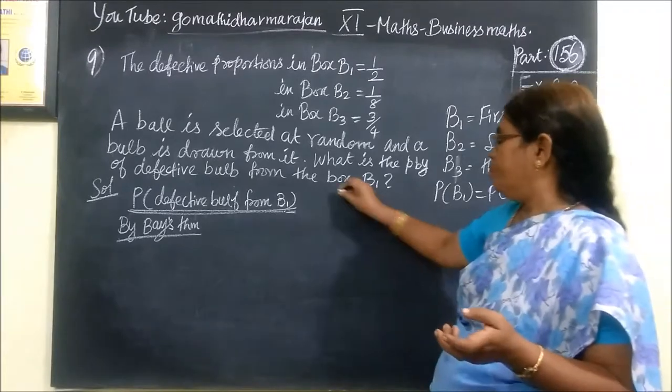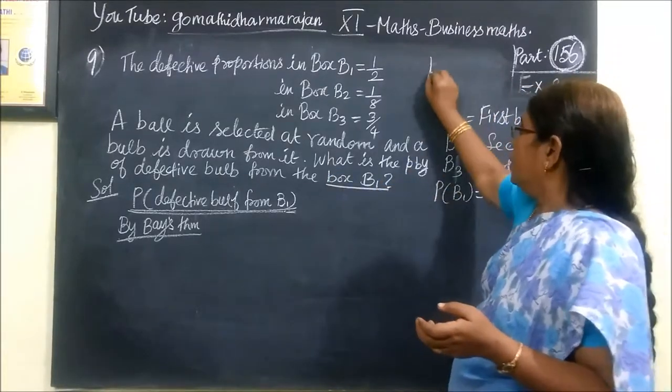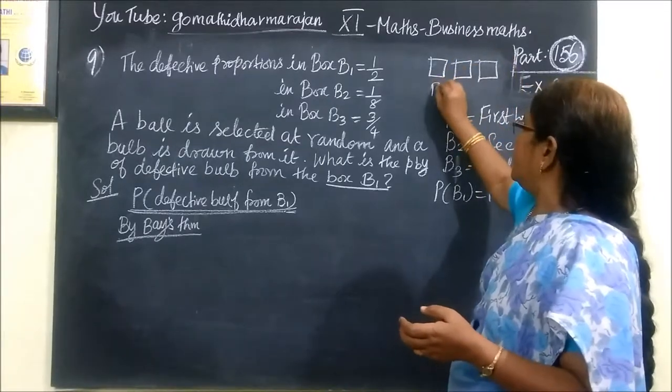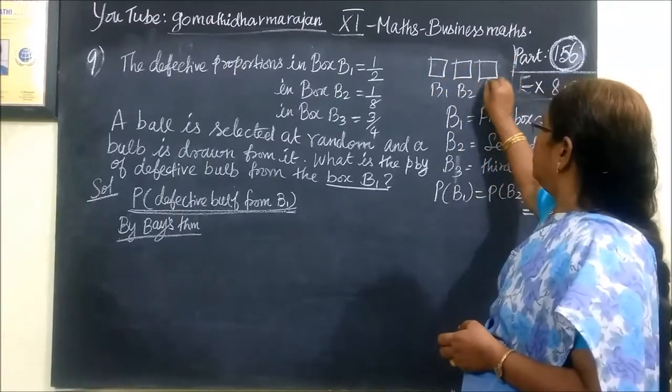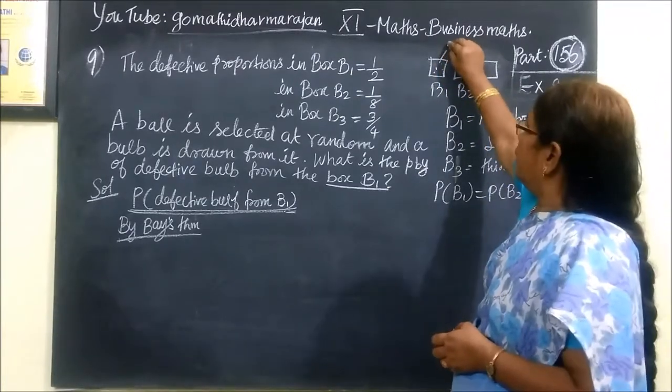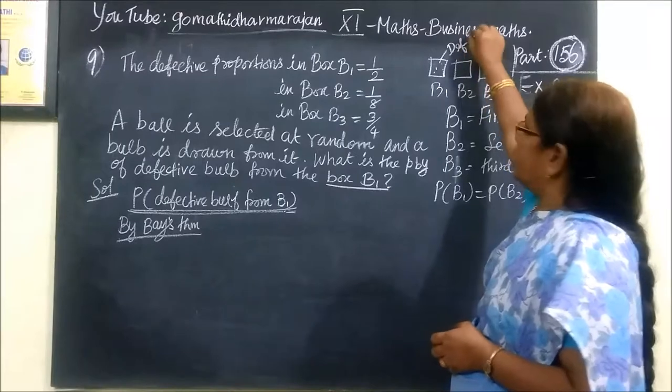And you are selecting from box 1. So, you are given 3 boxes, B1, B2, B3. You are selecting the box. You are selecting the box that is defective.